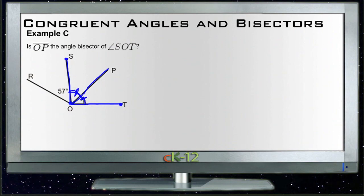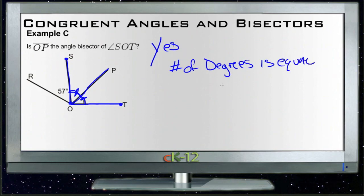They've been identified as having the same number of degrees, so OP is indeed the angle bisector. Yes, because the number of degrees is equal on each side. There you go.